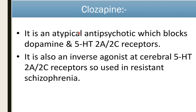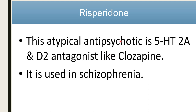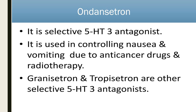Clozapine is an atypical antipsychotic drug that blocks dopamine as well as 5-HT2A and 2C receptors. It is also an inverse agonist at cerebral 5-HT2A and 2C receptors, used in treatment-resistant schizophrenic patients. Risperidone is an atypical antipsychotic acting on 5-HT2A and dopamine D2 receptor antagonism, like clozapine, used in schizophrenia. Ondansetron is a 5-HT3 antagonist used to control nausea and vomiting in anti-cancer therapy and radiotherapy patients. Granisetron and tropisetron are other selective 5-HT3 antagonists.